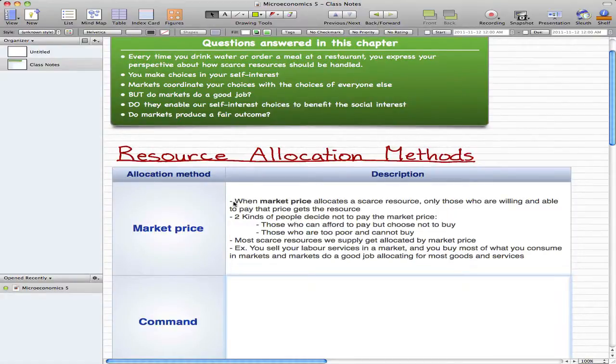Market price. When market price allocates a scarce resource, only those who are willing and able to pay that price get the resource. That's pretty much how our world works. Imagine you have a very nice computer that you want to buy—the computer is $2,000.